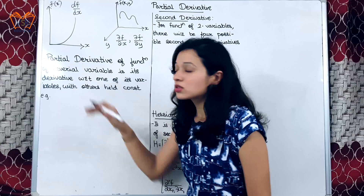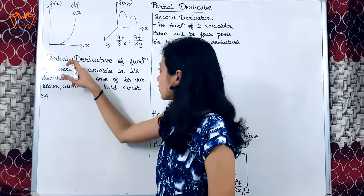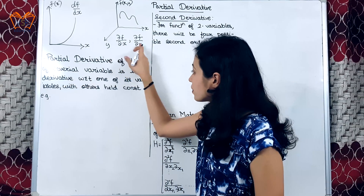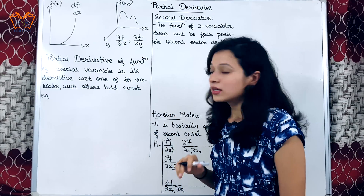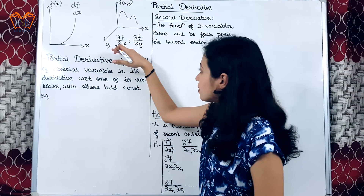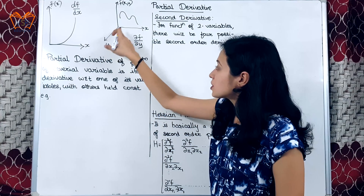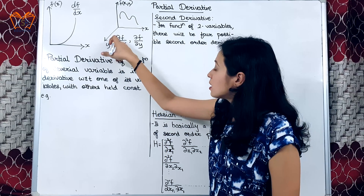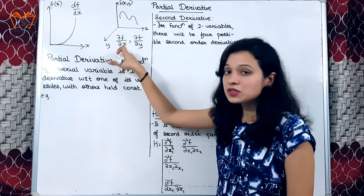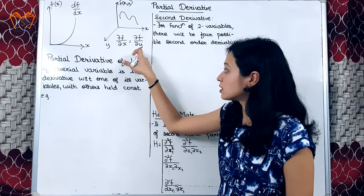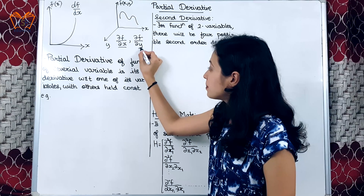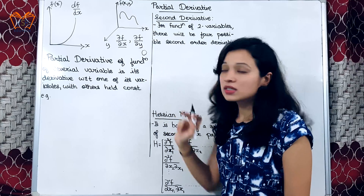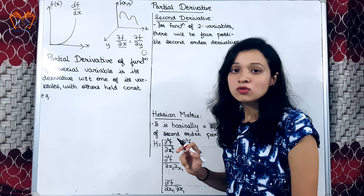Let us see the definition of partial derivative. The partial derivative of a function of several variables is its derivative with respect to one of its variables with the others held constant. First we differentiate with respect to the first variable and then with respect to y. Whenever we go for partial differentiation with respect to the first variable, the other should be held constant. When we differentiate with respect to x, y will be held as constant, and we know that the derivative of a constant is equal to zero.